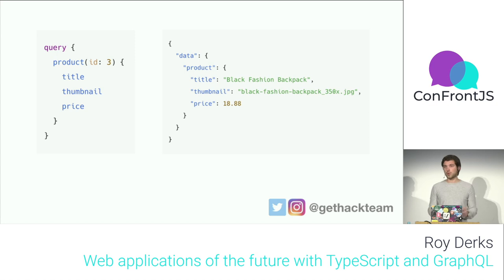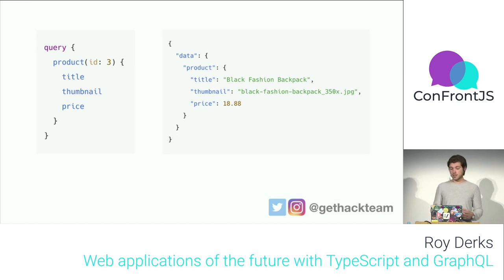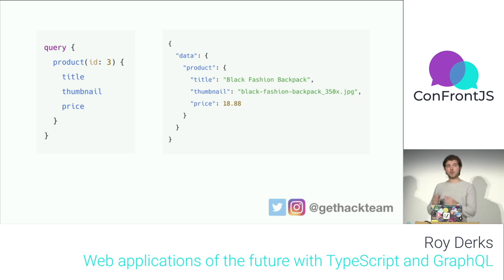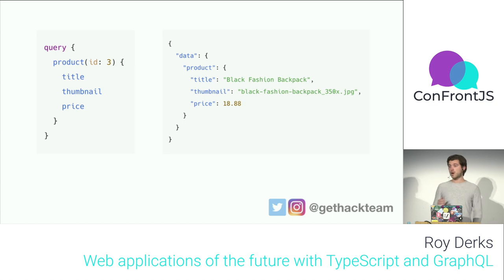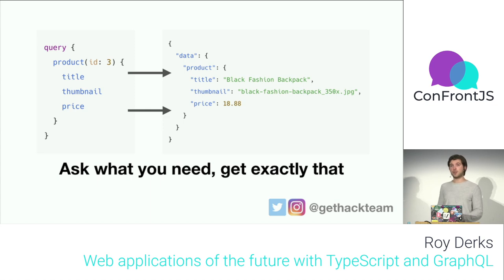With a GraphQL query, you're not sending a single request to an endpoint and getting whatever data is available. Instead, you define your queries and define what the returned data structure looks like. On the left you can see a query — I'm sending it over HTTP to my GraphQL API and asking for a product with a certain ID, requesting title, thumbnail, and price. On the right it returns JSON formatted the same way as the query, so it's easy to know what data you're expecting in your UI.